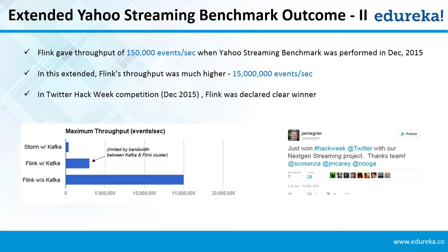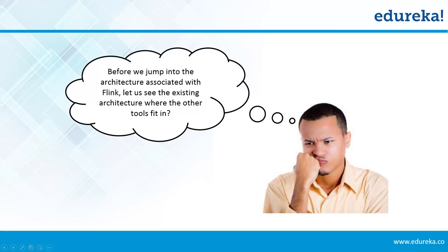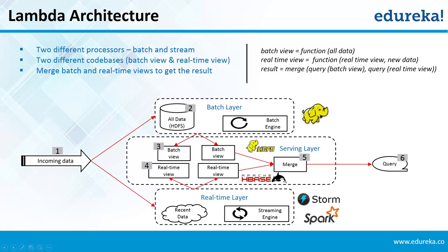The strength of Flink comes from its architecture. Let us first see the existing Lambda architecture where other tools like Spark and Storm fit in. In Lambda architecture, there are two layers: a batch layer on top and a real-time layer on the bottom. The batch layer stores historical data using systems like Hadoop, performs computation on the entire stored data, and creates batch views.